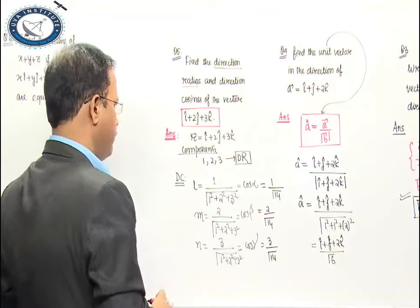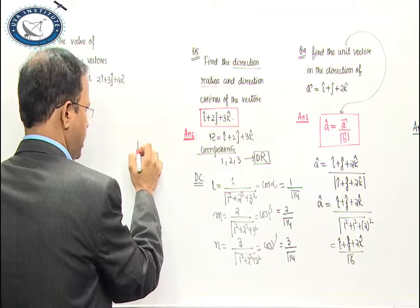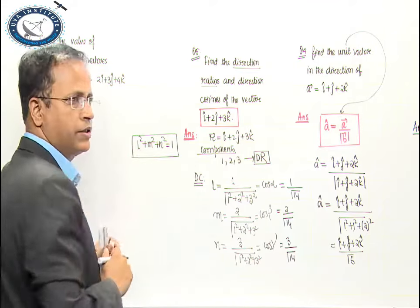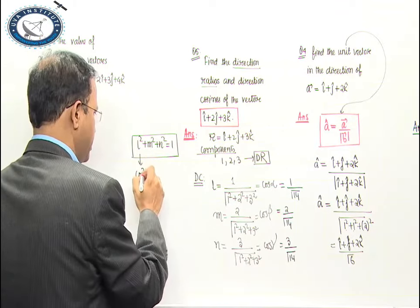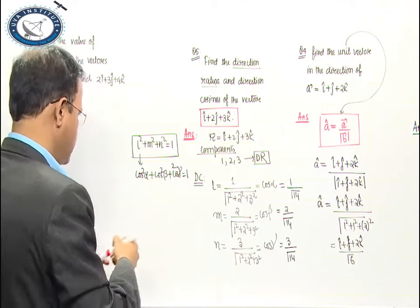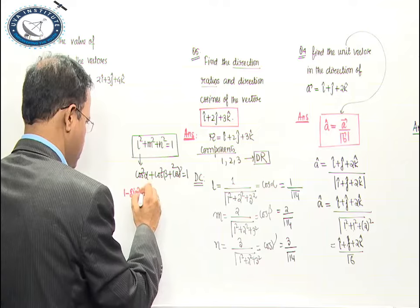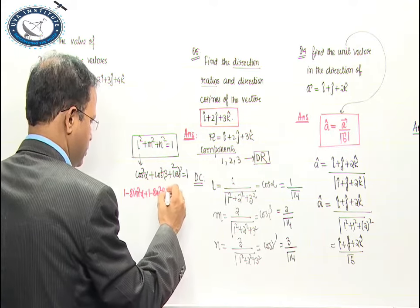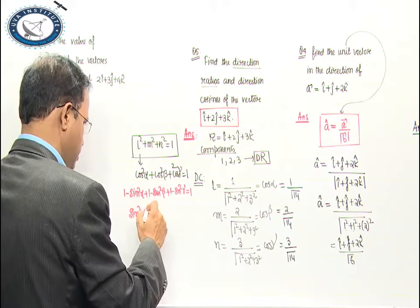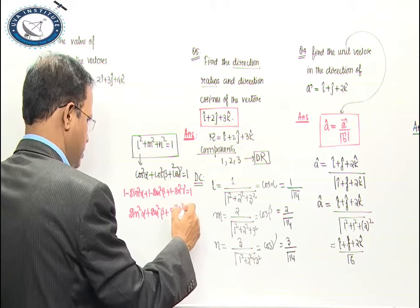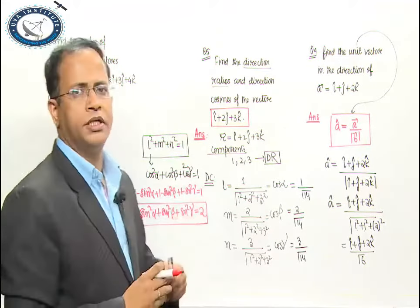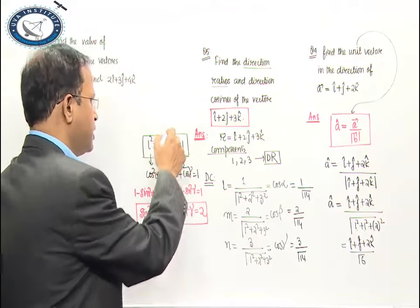Got it? Now, a very interesting fundamental to always remember: L squared plus m squared plus n squared is always equal to 1. This means cos²α + cos²β + cos²γ = 1. Expanding using sin: (1 − sin²α) + (1 − sin²β) + (1 − sin²γ) = 1, which gives sin²α + sin²β + sin²γ = 2. You can use this relation anywhere in the exam.